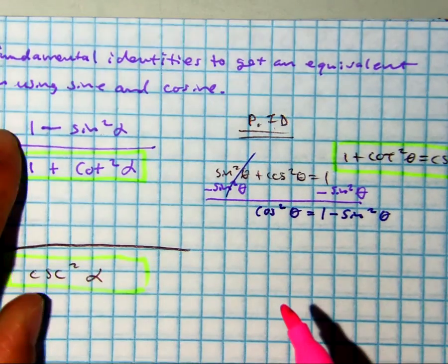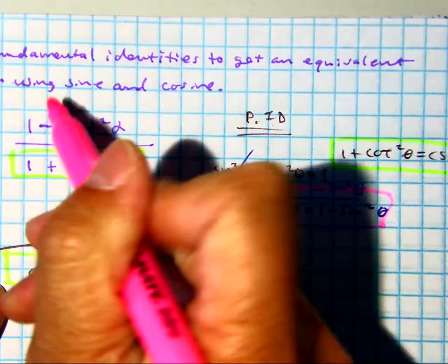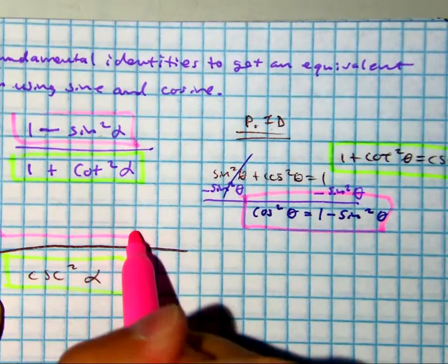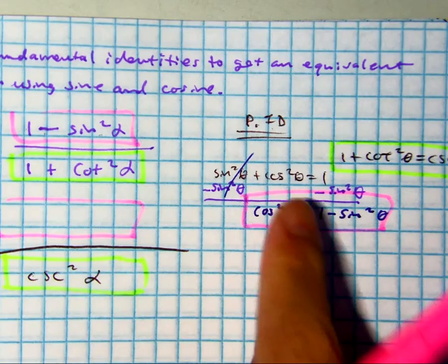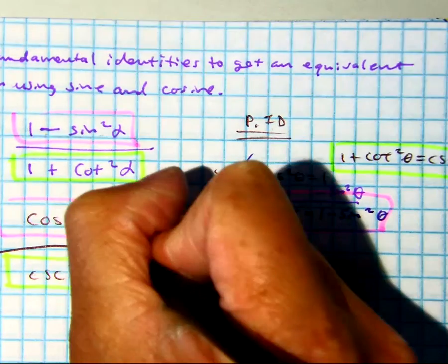Class, instead of writing 1 minus sine squared, we're going to write what? Cosine squared of an angle. And our angle is alpha, cosine squared alpha.